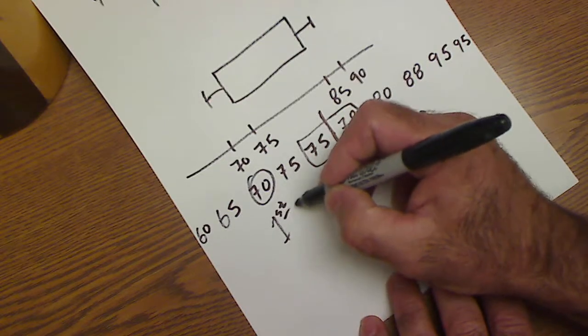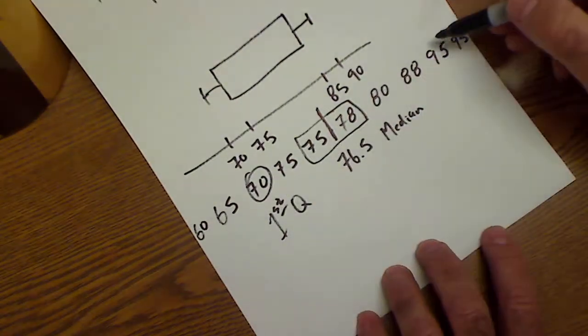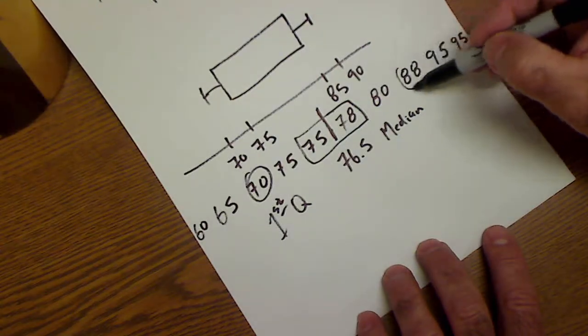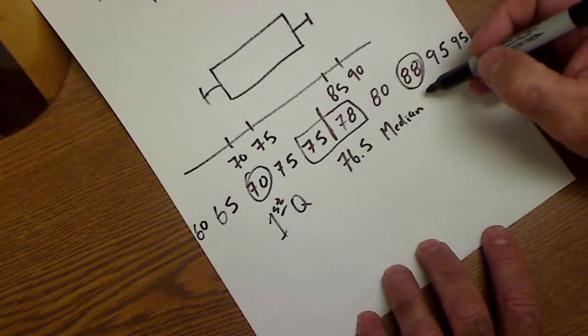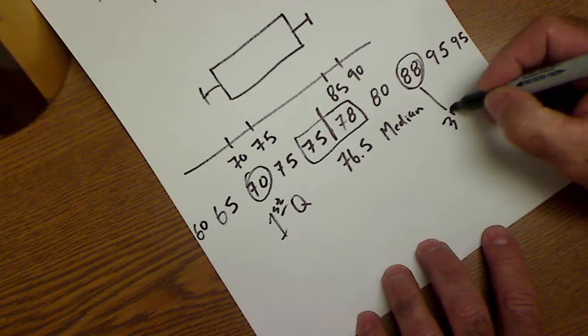Oh, class is coming in. I'll go quick. My first quartile, I have five values to the right. This is right in the middle of those five values. This is my third quartile.